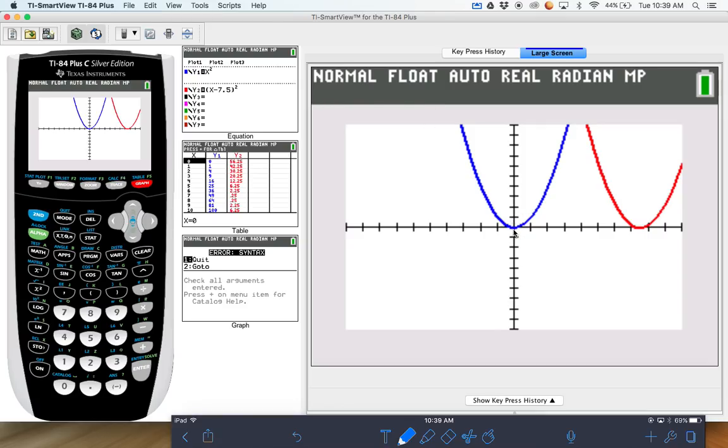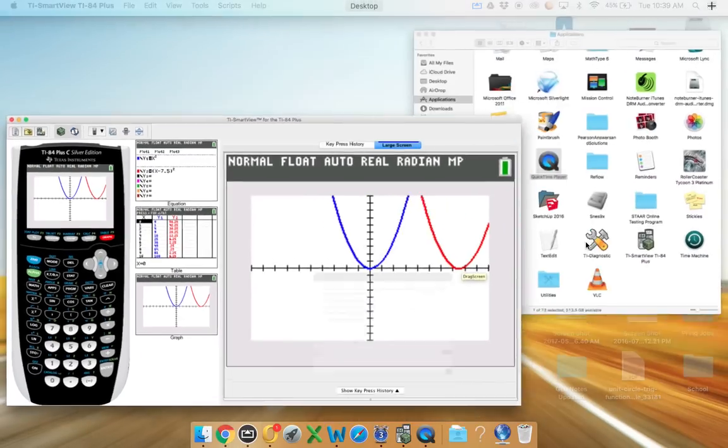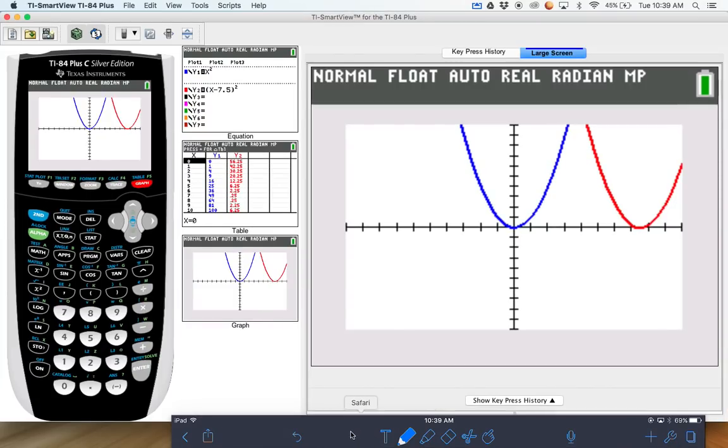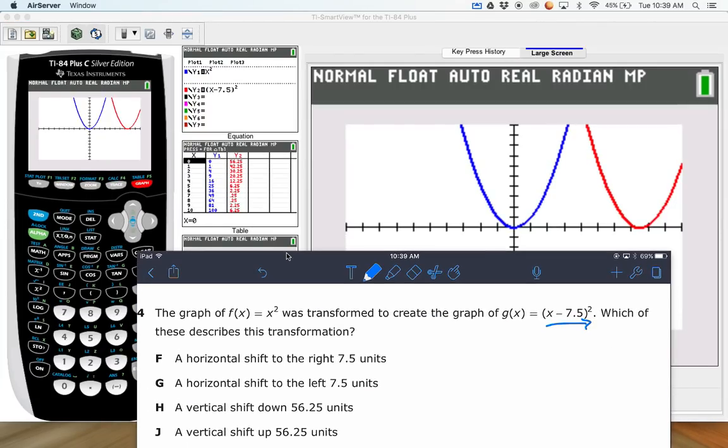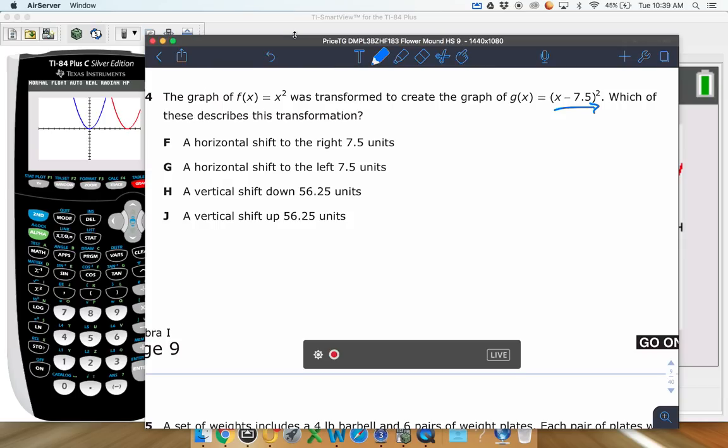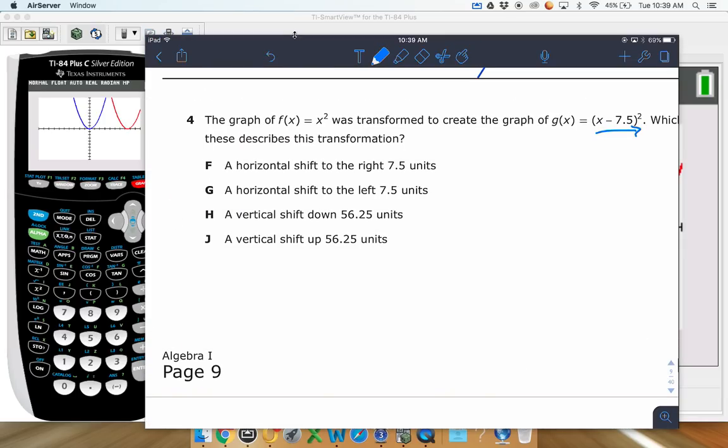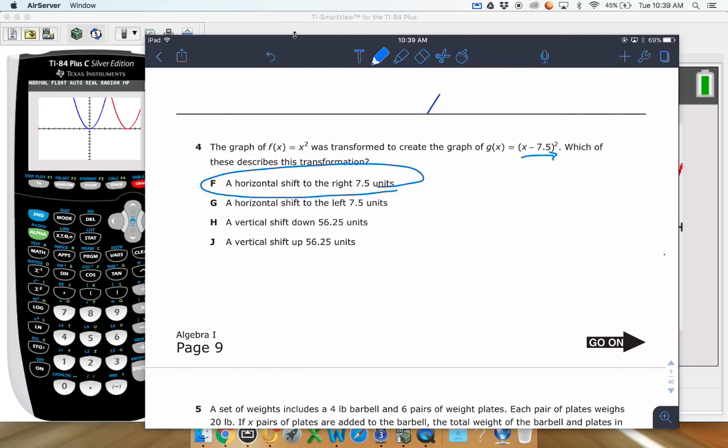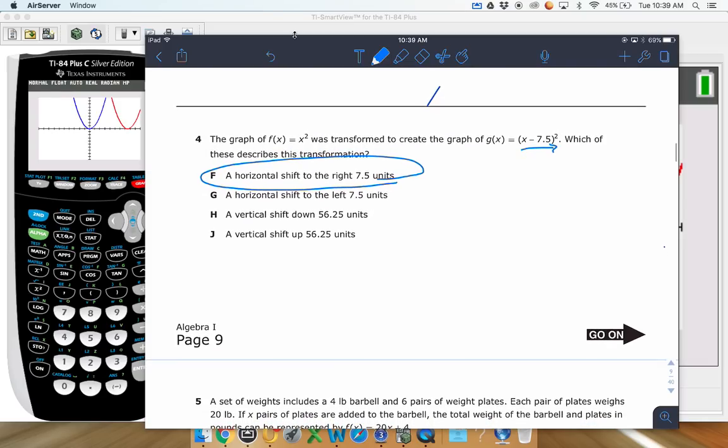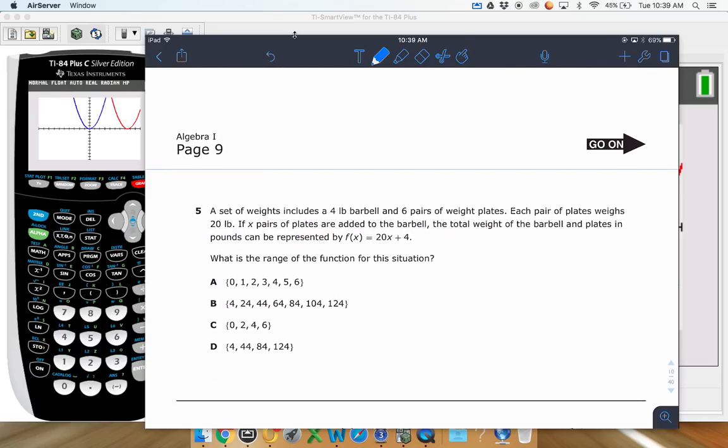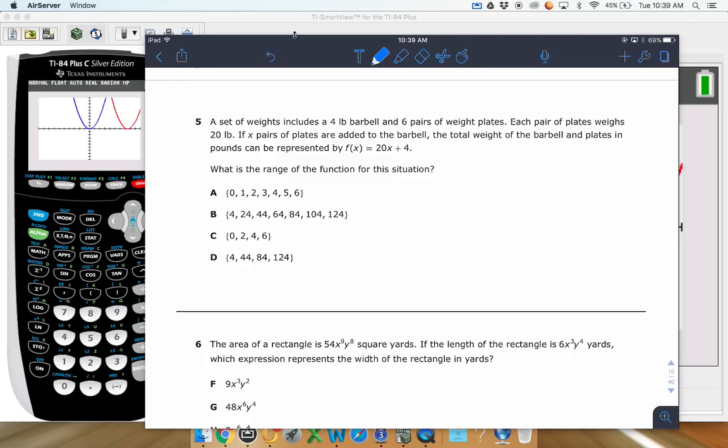Hopefully we can see these together. There's that first graph. There's your X squared graph. And there's the one that was X minus 7.5 squared. So if you look here, if you look at the vertex, which is always a key point to look at, the vertex is shifted over to the right 7.5 units right there. So that would be your answer on that. So we'll say horizontal shift, right, 7.5 units there. So that would be F. I'll have the rules in a second where you can go and grab those if you want to study those.